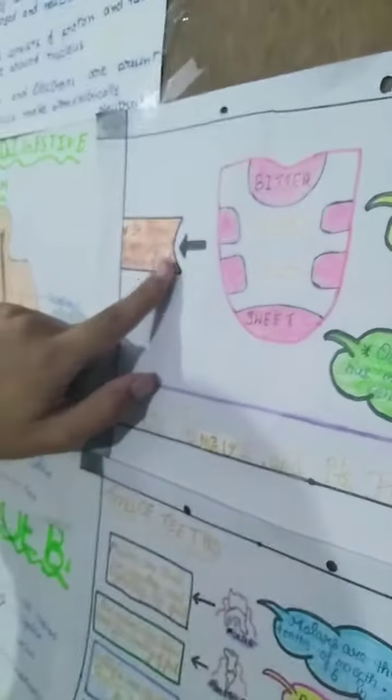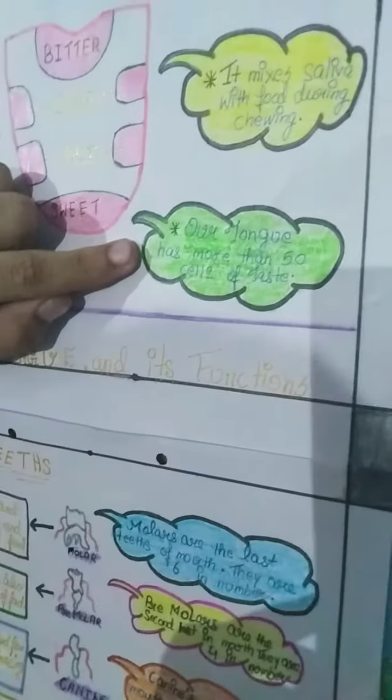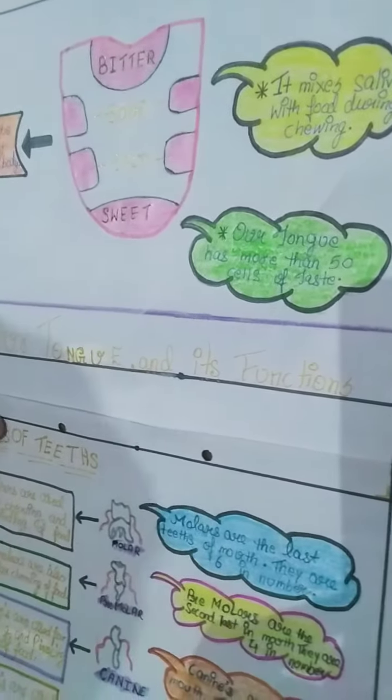Second, it is the strongest muscle of the mouth. Third, our tongue has more than 50 cells of taste. So, these were the functions of our tongue.